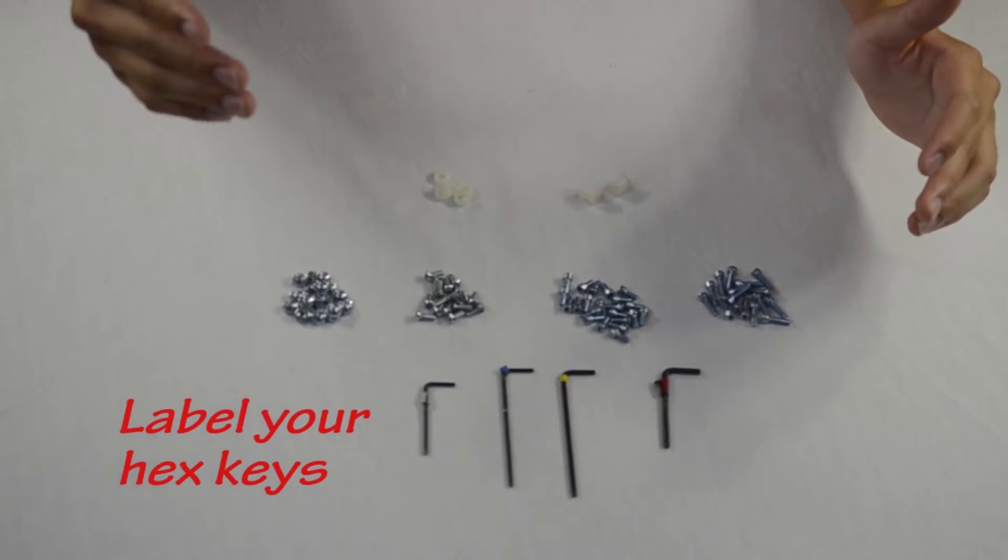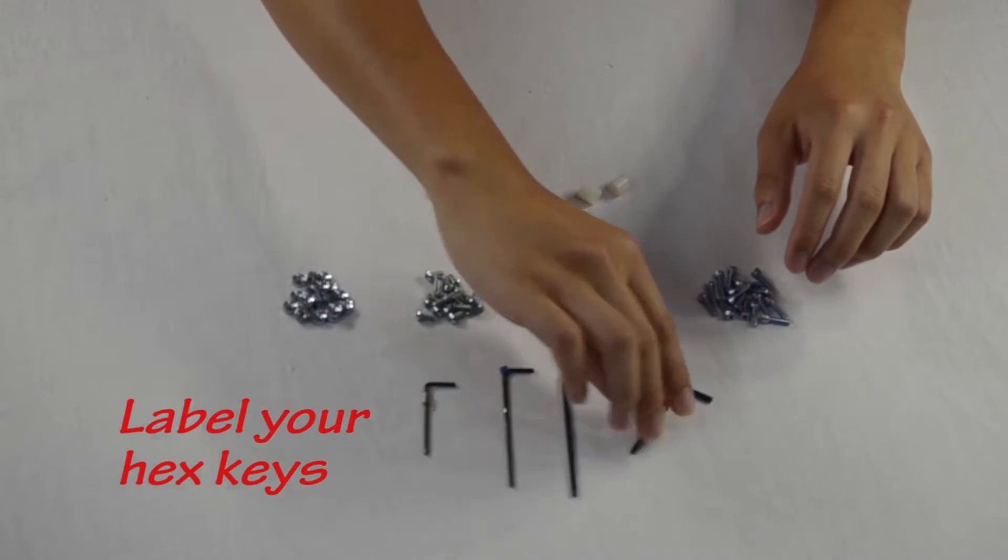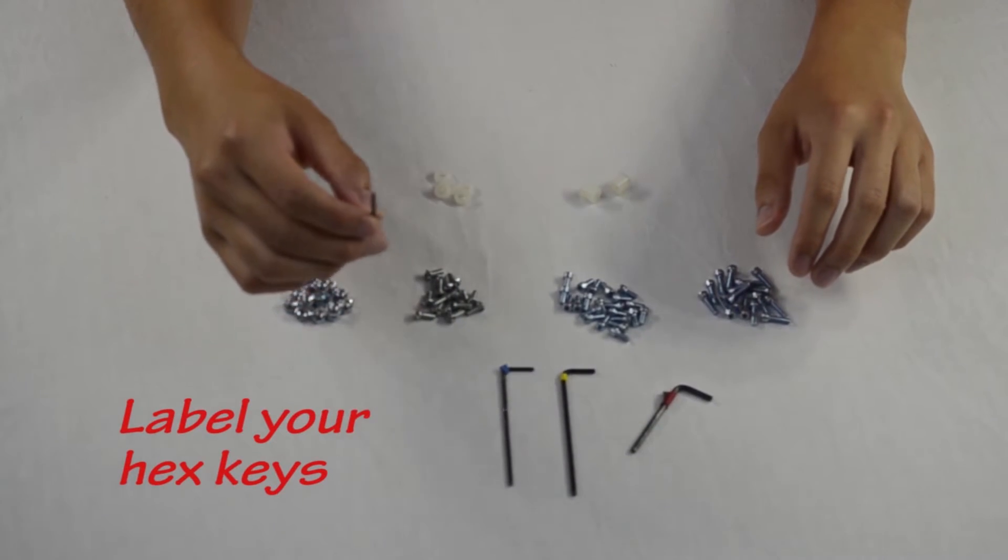So we just recommend four different colors: white, blue, yellow, and red, with red corresponding to the fattest one and white corresponding to the thinnest one.